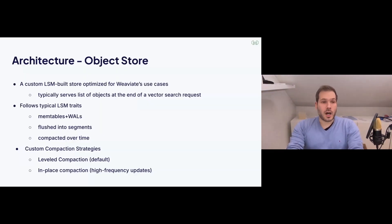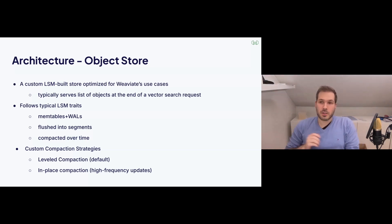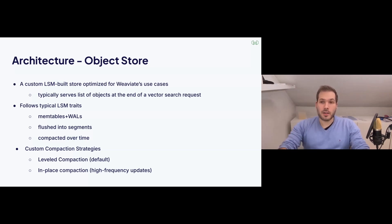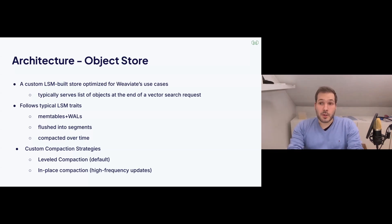For the first part of the architecture, the object store, it's a custom-built LSM store — a log-structured merge tree — with all the typical traits you'd expect: a memory structure you write into that's periodically flushed, a write-ahead log to ensure persistence if it crashes before the memtable is flushed, and over time individual segments get compacted. The standard strategy is leveled compaction — two segments of level one combine into level two, and so on. If you've ever played the game 2048, it's kind of exactly the same process.